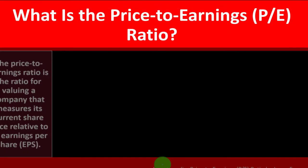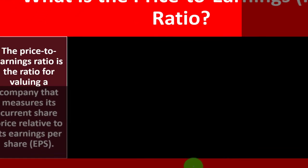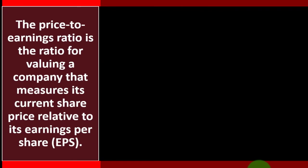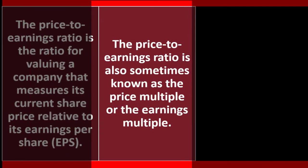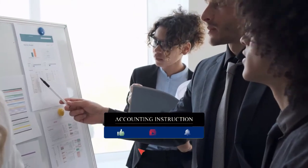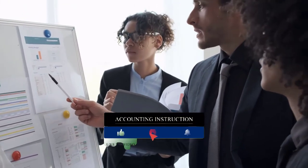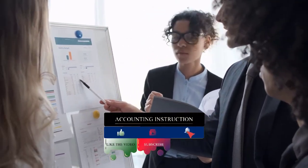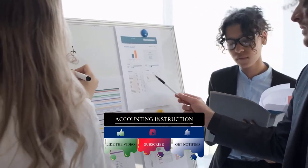So what is the price earnings PE ratio? The price to earnings ratio is the ratio for valuing a company that measures its current share price relative to its earnings per share, the EPS. The price to earnings ratio is also sometimes known as the price multiple or the earnings multiple.